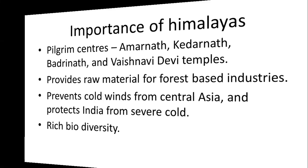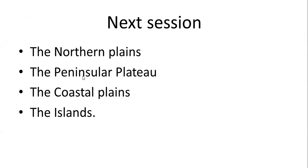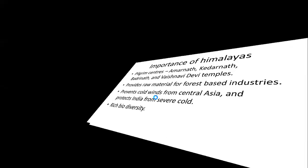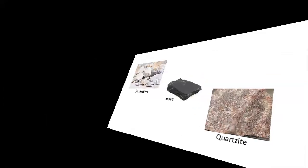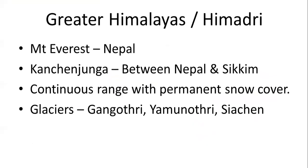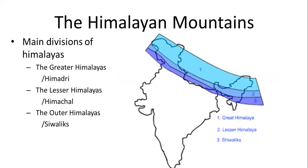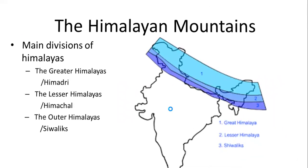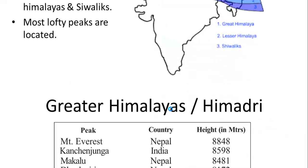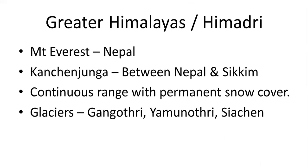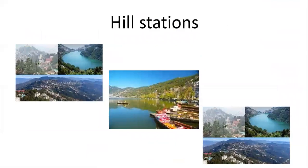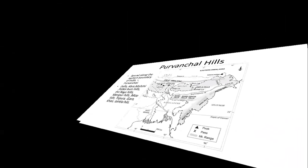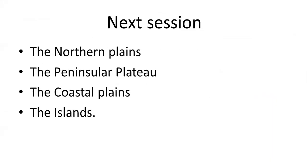By this, I have come to the end of the session. The next session will cover Northern Plains, Peninsula Plateau, Coastal Plains, and Islands. Just as a recap — the three Himalayan mountain divisions are Greater Himalayas, Lesser Himalayas, and Outer Himalayas. I have given all the slides in points — just go through them, study the points, and note them down. You can subscribe to my channel for better updates on new lessons. All the best, children. Thank you very much. By this, we come to the end of the lesson.